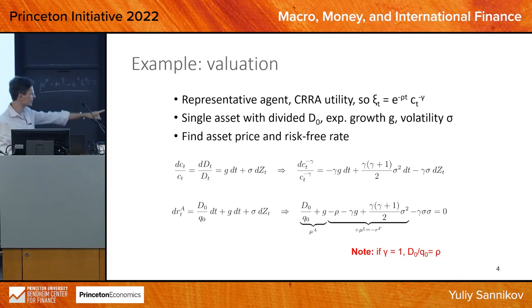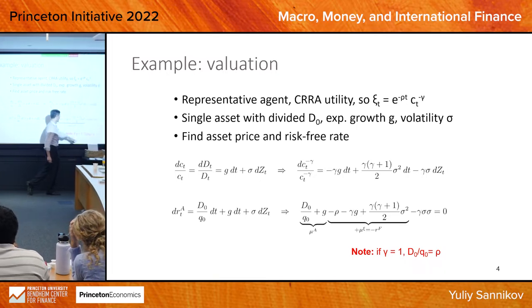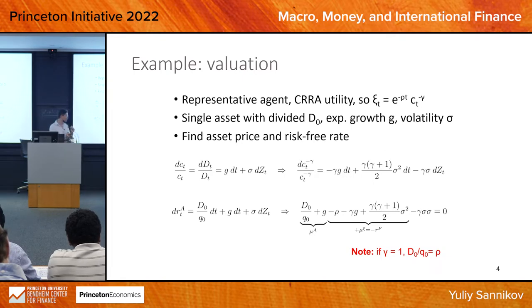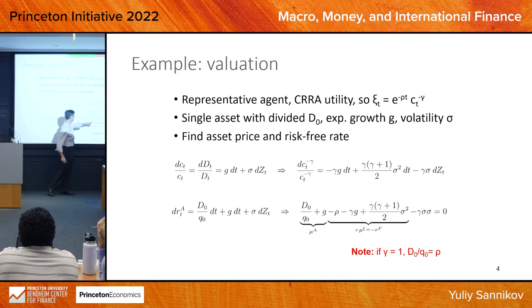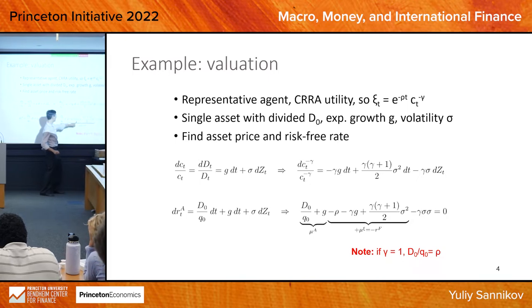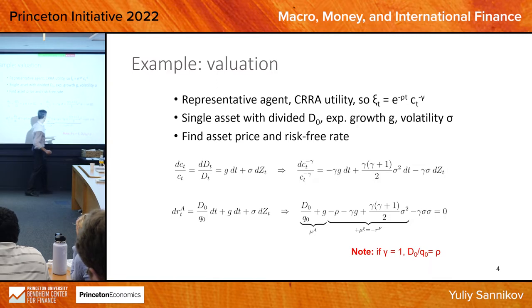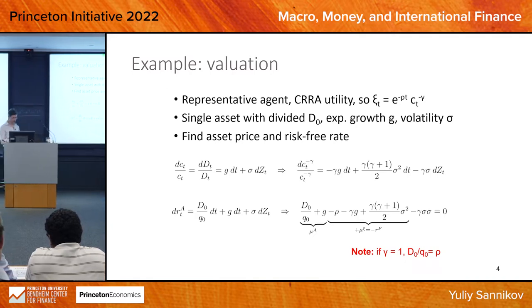One remark: in the special case of log utility, gamma equals 1. If we plug in gamma equal to 1, these terms cancel out and we get that the dividend-to-price ratio equals rho. Therefore, an individual with logarithmic utility will consume rho times wealth. This is a fact that's always true about logarithmic utility.